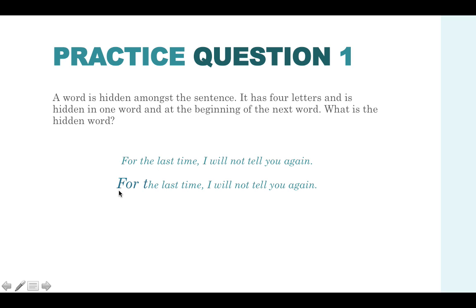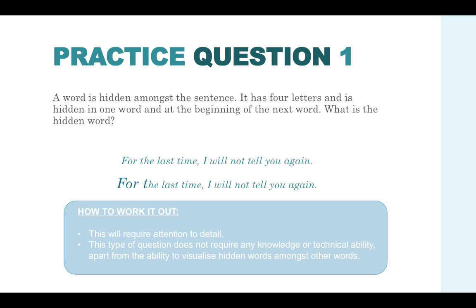As you can see, the first word for and the second word the has the hidden word of thought. So this is a relatively easy question, but it can be quite tricky if you're unable to visualize what's going on in the sentence. The more practice questions you try, the easier the hidden questions will become. Remember, how to work it out. This requires attention to detail. This type of question does not require any knowledge or technical ability, apart from the ability to visualize hidden words amongst other words.